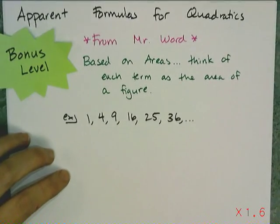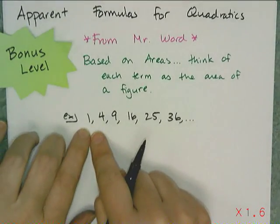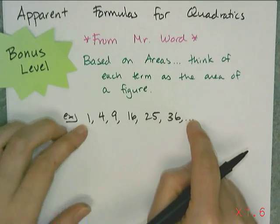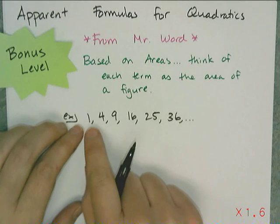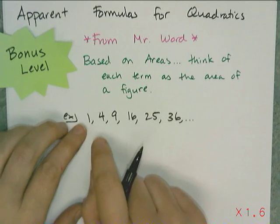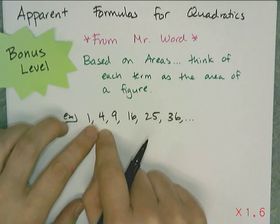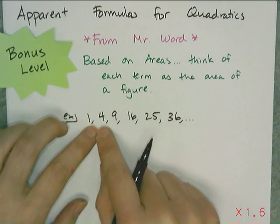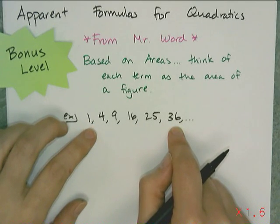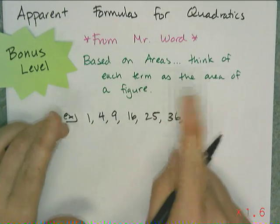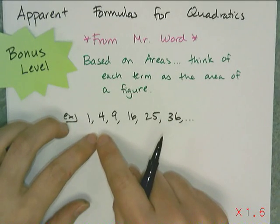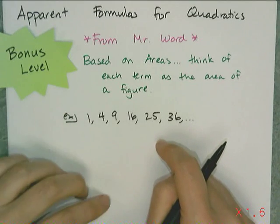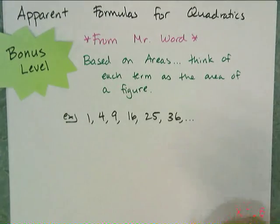Let's take the most basic of the quadratics: 1, 4, 9, 16, 25, 36. First, I can verify that this is quadratic, because if I add 3, 5, 7, 9, 11, I generate these terms. So the first difference is not constant, but there's a pattern in it — each number I add increases by 2, or they're the odd numbers.